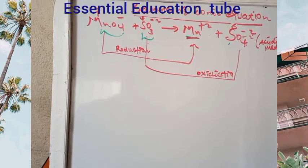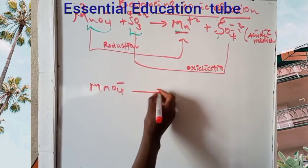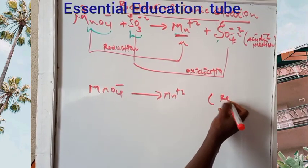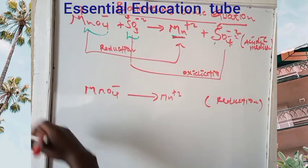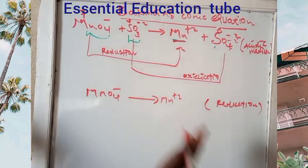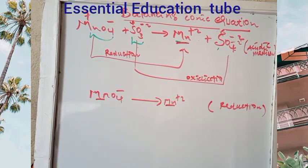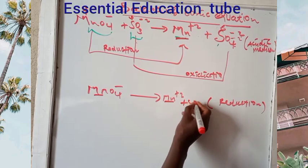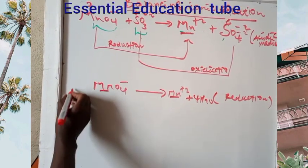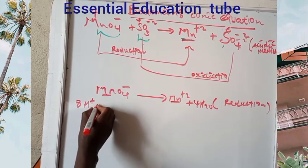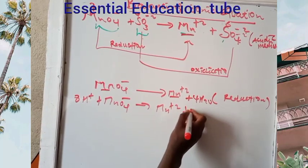To balance the reduction half-reaction: permanganate ion changes to manganese +2. First balance manganese — manganese is already balanced. Then balance oxygen: add 4 moles of water. For each oxygen, one water molecule is added. Then add 8 hydrogen plus ions to the left side.